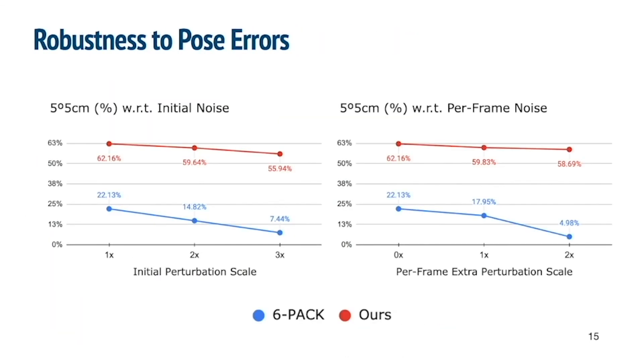Regarding tracking robustness, on the left, we plot 5-degree 5-centimeter accuracy with respect to the amount of initial pose errors. On the right, we plot the accuracy with respect to pose noises added to every frame during tracking. Our method is significantly more robust to noises than 6-pack.